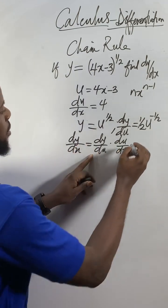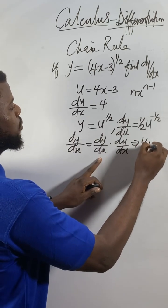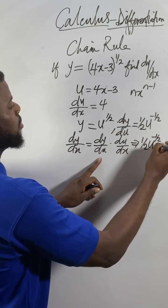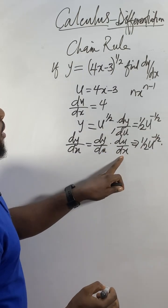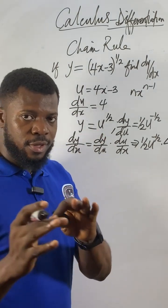So dy/du is (1/2)u^(-1/2), and du/dx is 4. Multiplying these together.